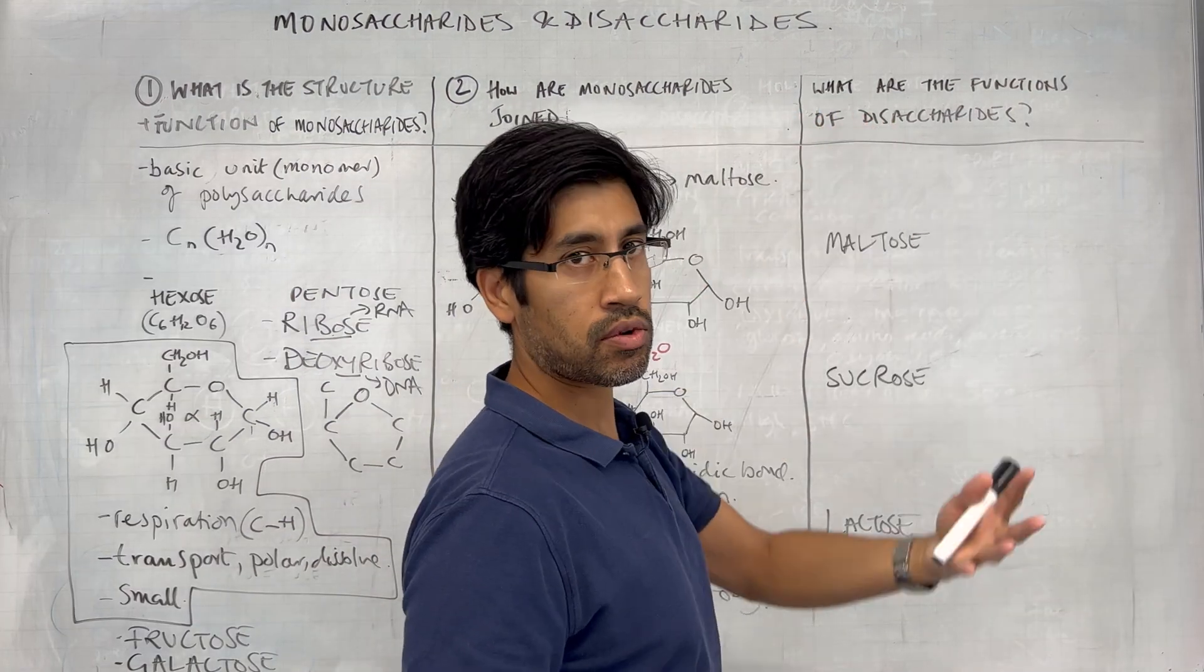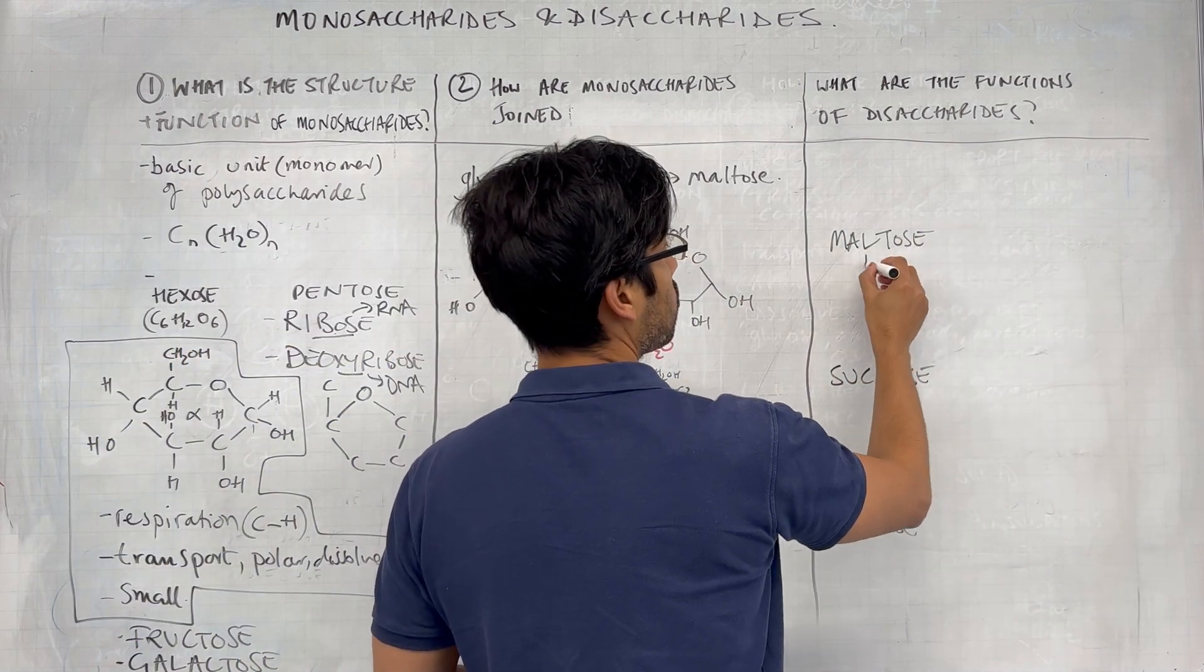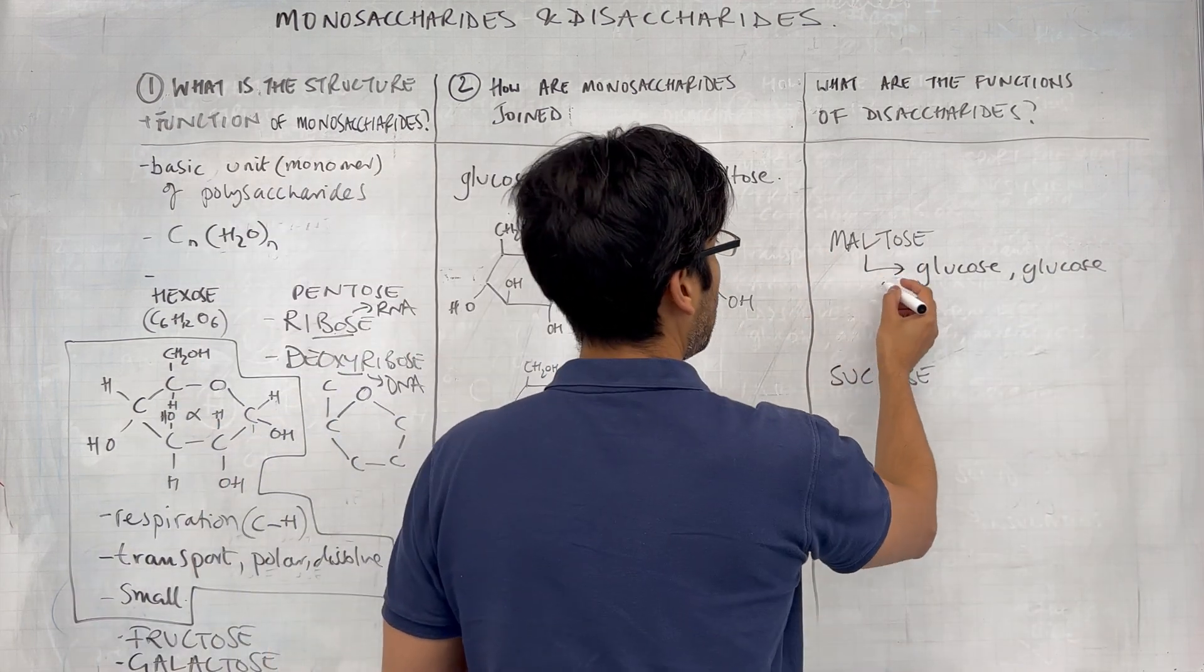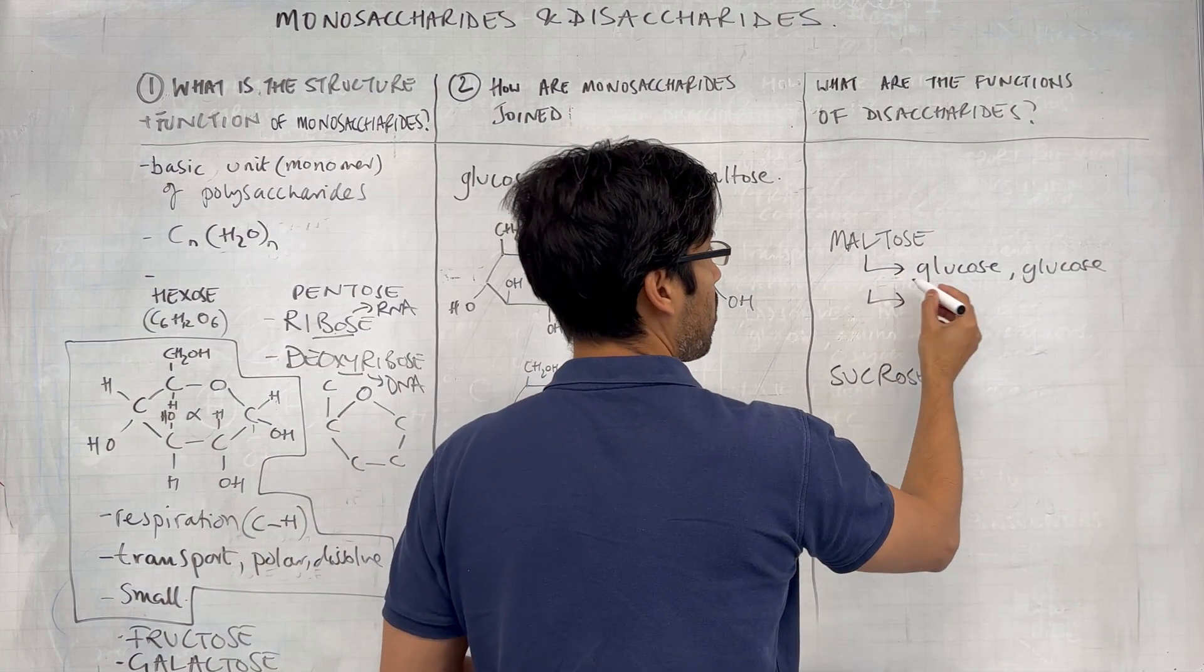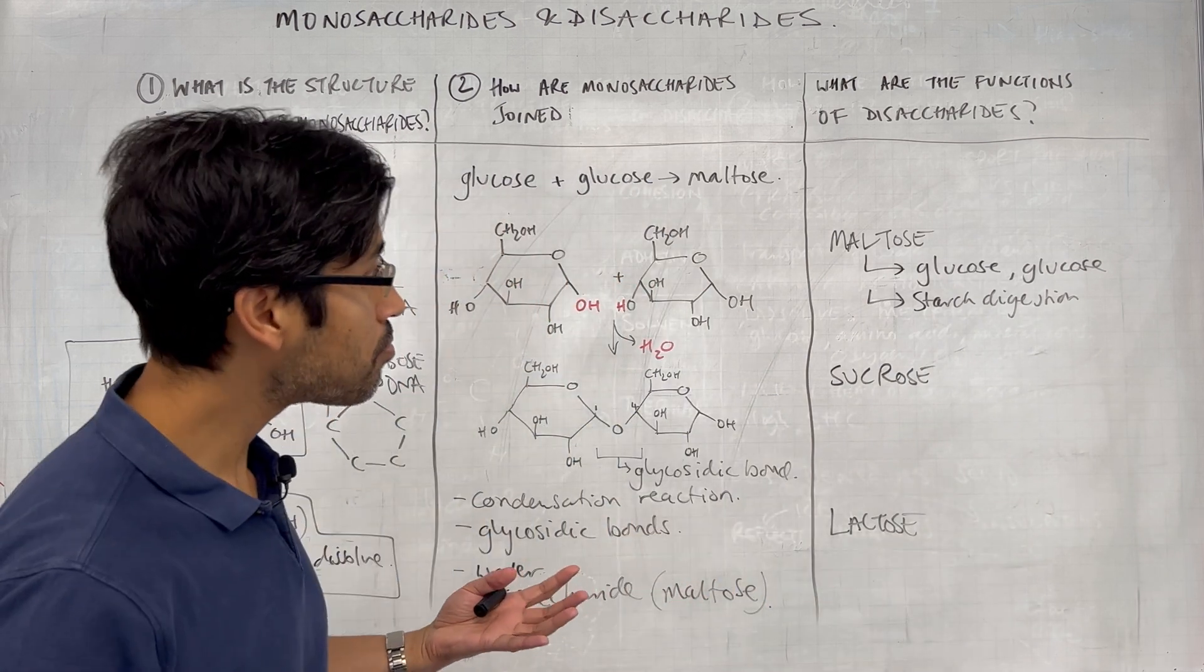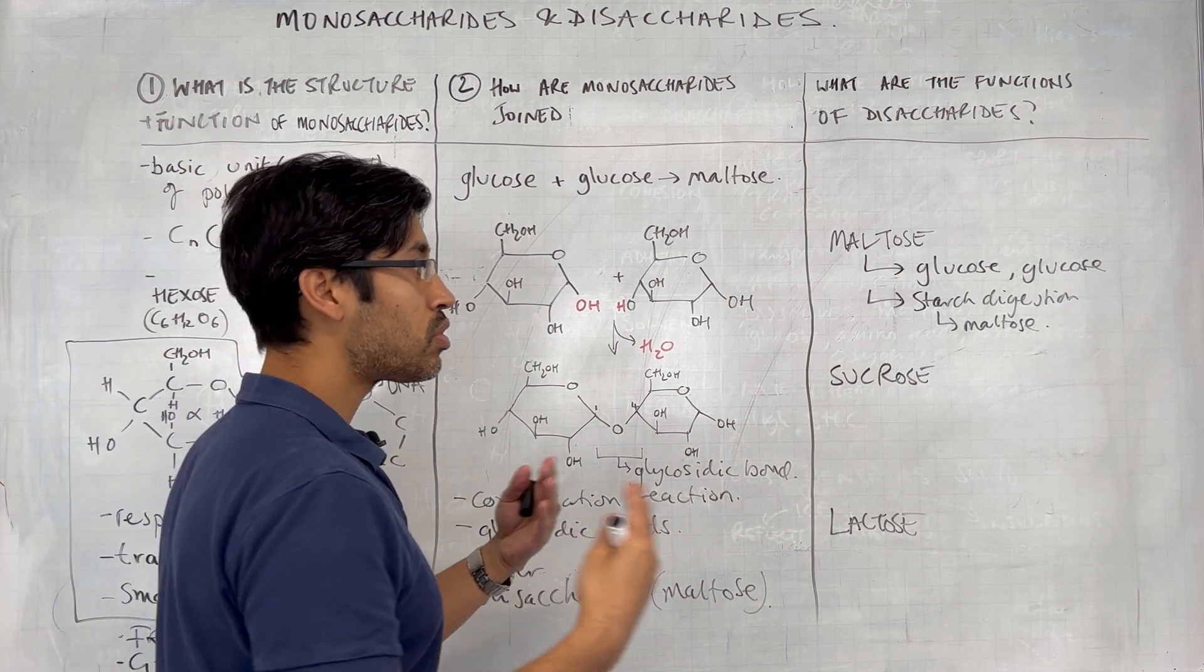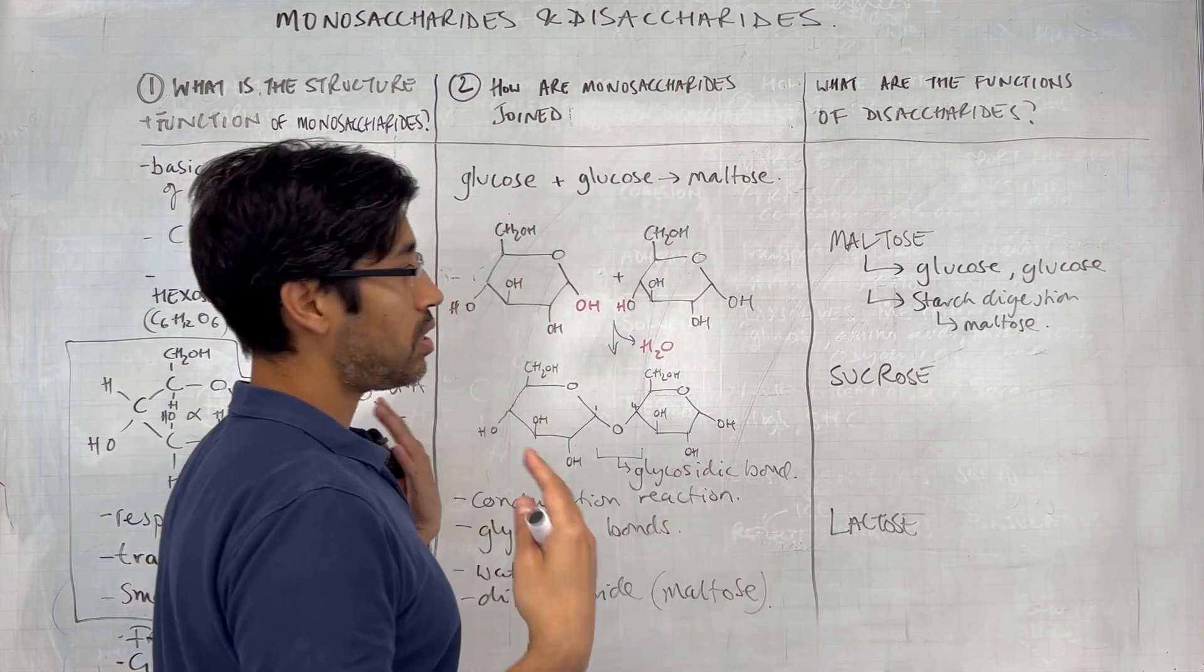What are the functions of disaccharides? So maltose, where does maltose pop up in the specification? We need to know that maltose is a disaccharide of glucose and glucose. What else do we need to know? Really, that's it. I guess where it pops up is when starch is broken down in the animal digestive system, the breakdown of ingested starch, results in the production of maltose. And then maltose is then further broken down to glucose and absorbed into the blood. And then it's assimilated from that point, it will go to the liver, the liver will deal with it.